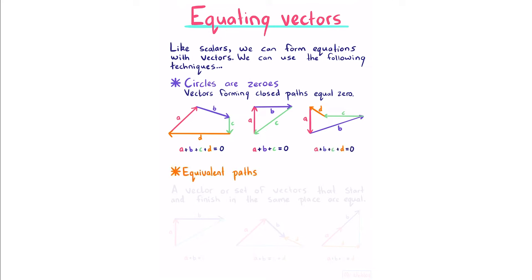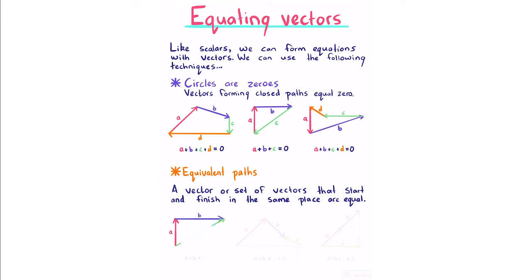Equivalent paths. A vector or set of vectors that start and finish in the same place are equal. So if a plus b takes us to a destination, and a single vector c also reaches that same destination, then a plus b must equal c. Similarly, if a plus b equals c plus d, both reaching the same destination, and a plus b plus c equals d, those relationships hold.